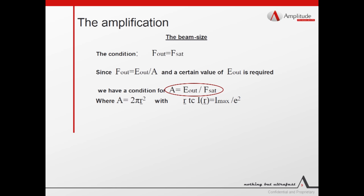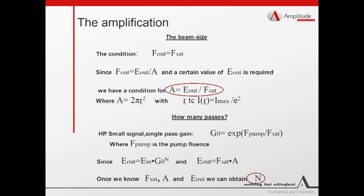Since a certain value of output energy is required, we can scale the area by consequence. The second question is, how many passes in the amplifier we will need to reach E_out? We can calculate it by knowing the single pass gain in approximation of small signal that is shown in the formula. As we see, the gain is depending on the pump fluence. According to the formula, since we know the input energy, the saturation fluence and the area, we can estimate the number of passes.